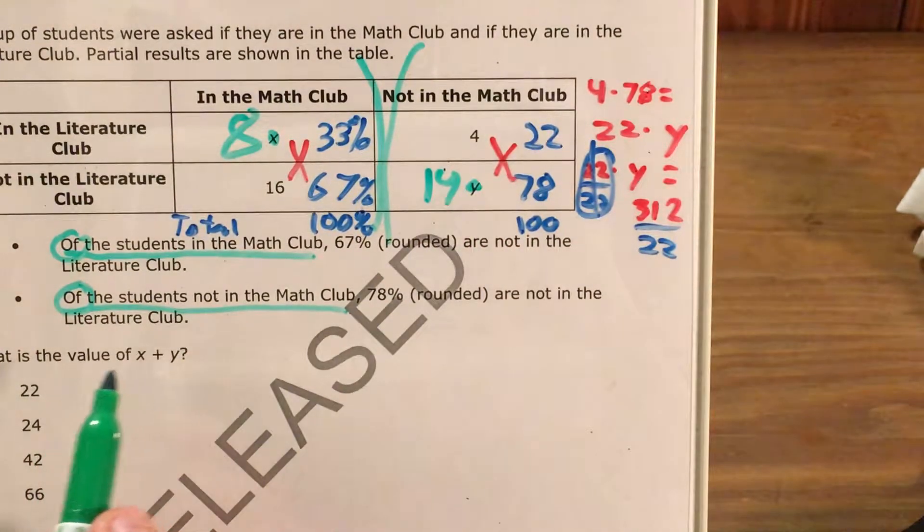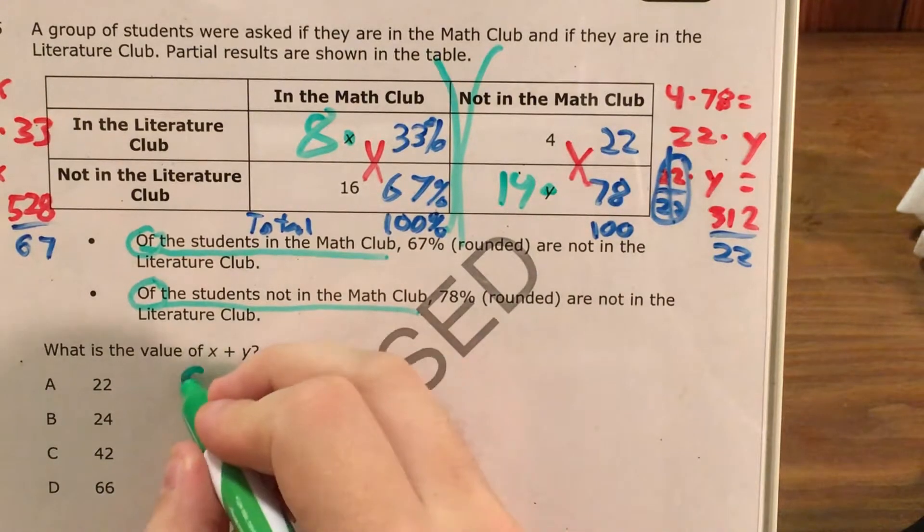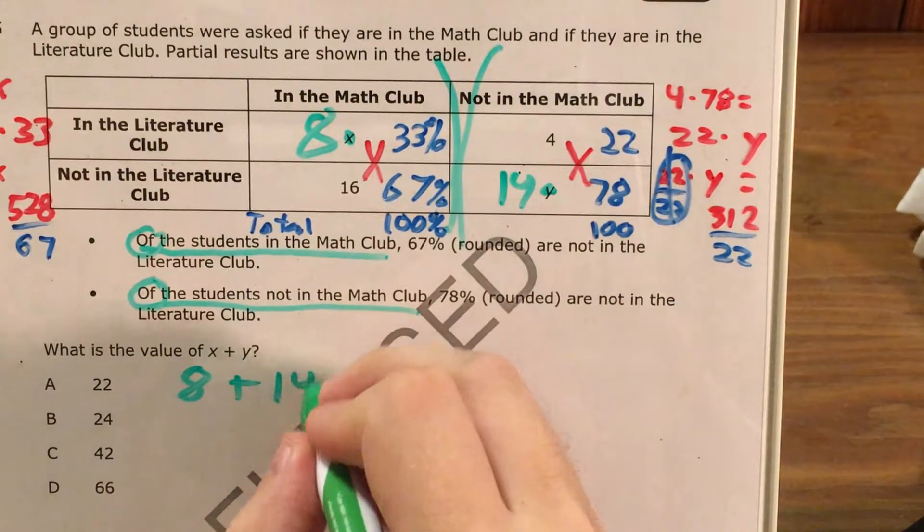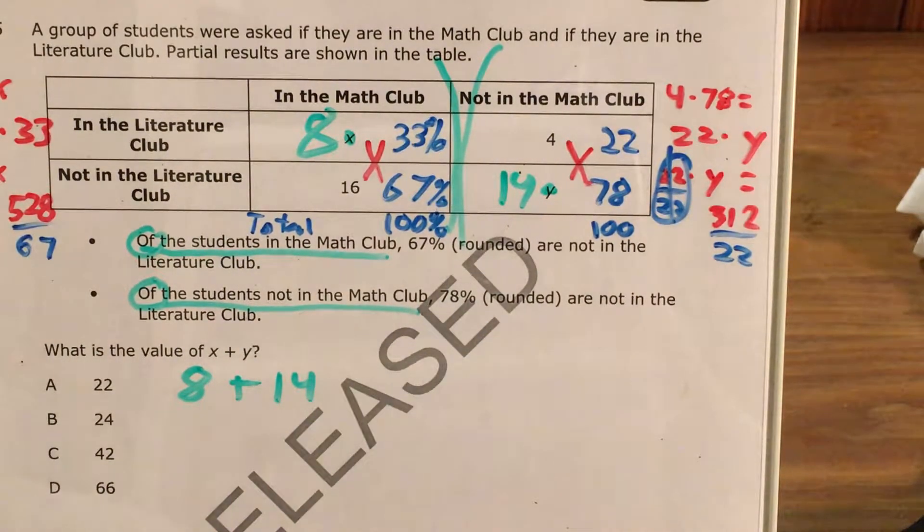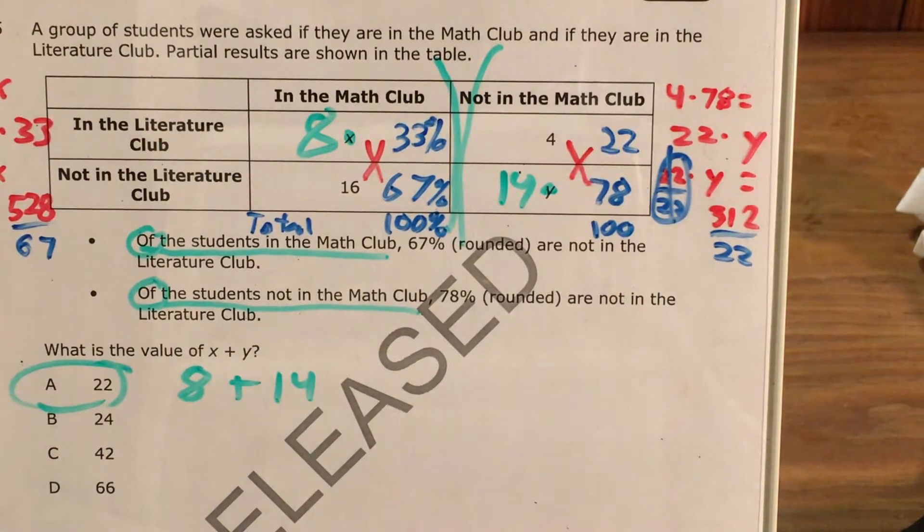And finally, since I'm trying to figure out the value of x plus y, x is 8, y is 14. So x plus y is 8 plus 14, which gives me 22. All that work to do a couple of proportions and get an anticlimactic answer of 22.